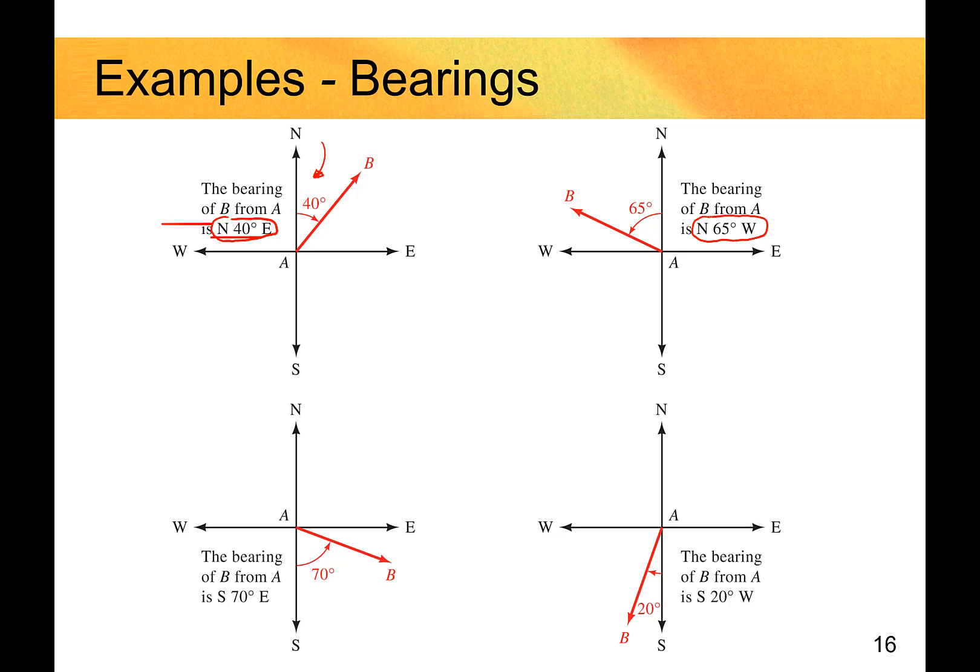Next one here: this would be north 65 west. Again, the angle measurement is coming off of the northern direction and it's leaning towards the west side. And so something bearing south 70 degrees east. If you also want to think in terms of quadrants you can do that as well. Last example here: south 20 degrees west. That's pretty easy enough to see how those correspond.